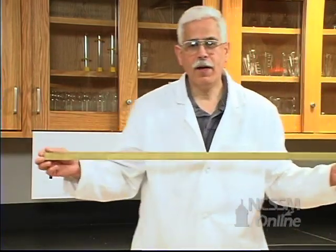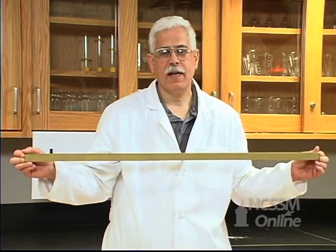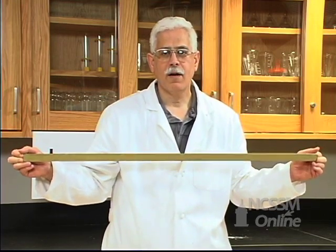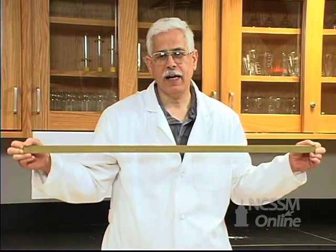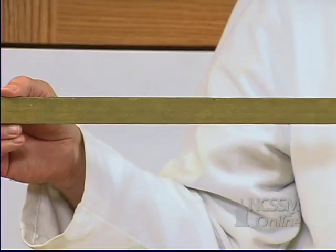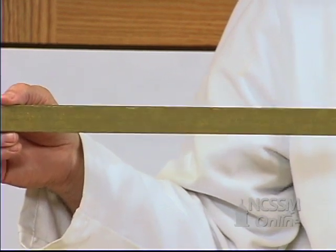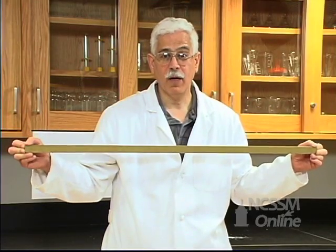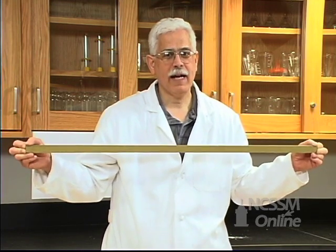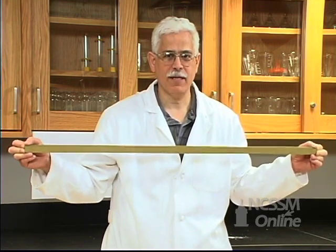If we report that piece of information as 0.30 meters, what we're telling someone is that we could actually visually divide this scale into a hundred equal parts and estimate the nearest one of those. So basically say that it is the thirtieth one of those. That's really not practical given the calibrations on this meter stick.